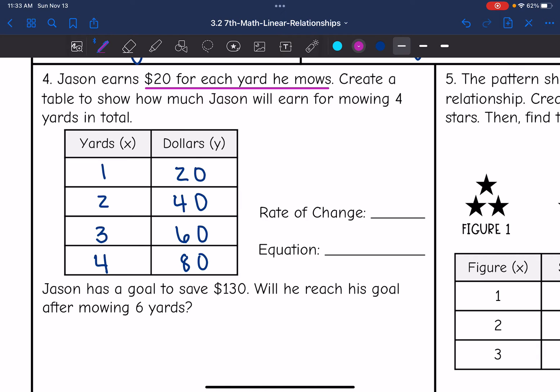So we just used that rate of change to fill out the table. I don't need to calculate it. I already know what it is. The rate of change is $20. He's earning $20 for each yard. So that means the equation would be y equals 20x.